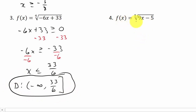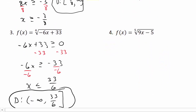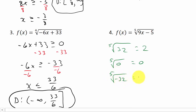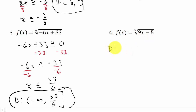Let's take a look at the last one. We have the fifth root of 9x minus 5. We can look at this the same way we did the cube root. The fifth root of 32 is 2, the fifth root of 0 is 0, and the fifth root of negative 32 is negative 2. So we can take the fifth root of a positive number, a negative number, or 0. It doesn't matter what's under the fifth root, so we can plug any number in for x, and the domain is negative infinity to positive infinity.